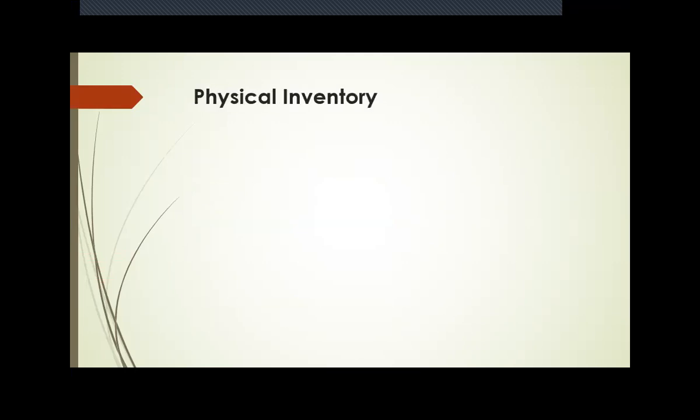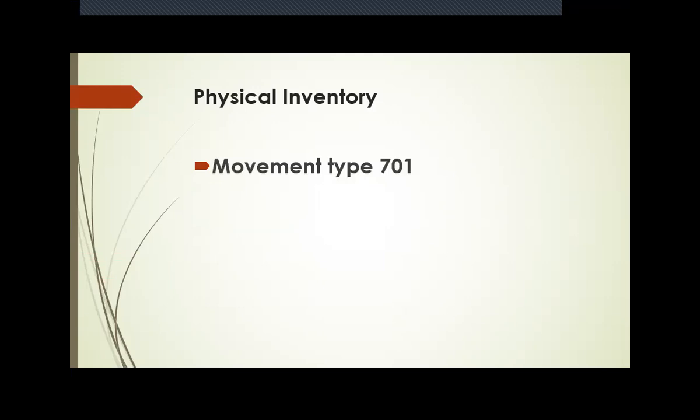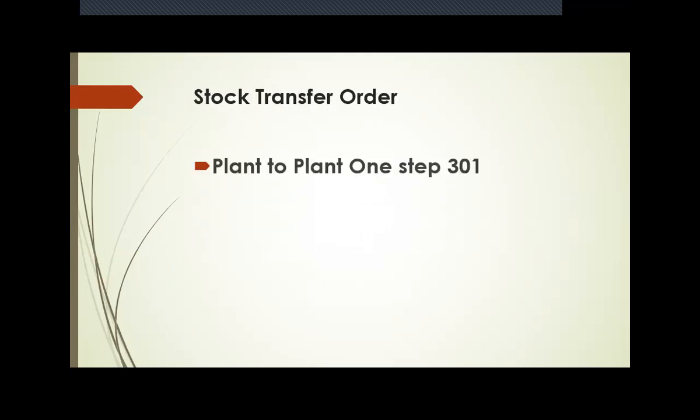For physical inventory, it is 701. For stock transfer order between plant to plant, the one step procedure is 301. Plant to plant two step procedure is 303 and 305.